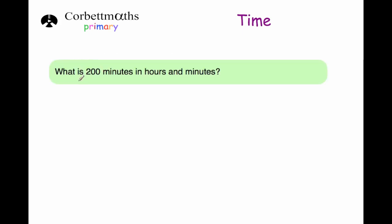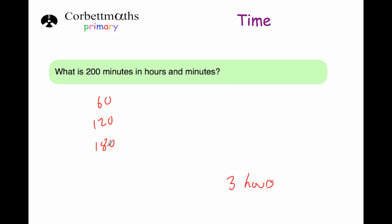The next question says: what is 200 minutes in hours and minutes? Whenever I get a question like this, I like to think of what the multiples of 60 are, because every 60 minutes is one hour. So 60 minutes is one hour, 120 minutes is two hours, 180 minutes is three hours. We're not going to bother with four hours because 240 is too many minutes. So we've got three hours and 20 minutes left over. So it's three hours, 20 minutes.